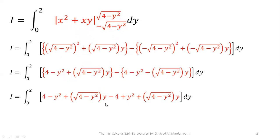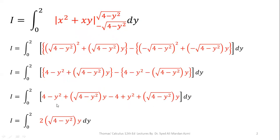Opening the brackets, the plus 4 cancels with minus 4, and the minus y squared cancels with plus y squared. We are left with 2 times square root of (4 minus y squared) times y, since the two like terms combine: 1 plus 1 equals 2.